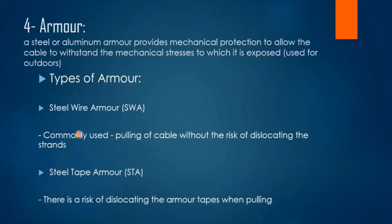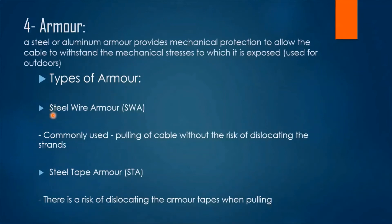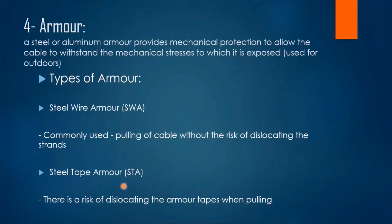The fourth layer is the armor layer — a steel or aluminum armor that provides mechanical protection, allowing the cable to withstand mechanical stresses. We mainly use armored cables for outdoors to prevent mechanical stresses from damaging the cable. There are two widely known types of armor: steel wire armor (SWA) and steel tape armor (STA). Steel wire armor is more preferred because while pulling the cable, there is no risk of dislocating the strands, whereas steel tape armor has a risk of dislocating the armor when pulling.